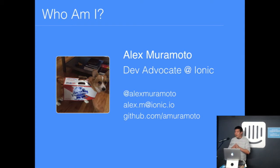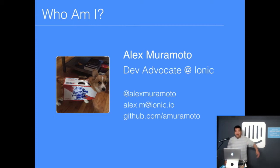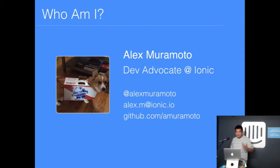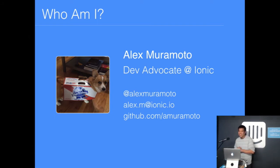My name is Alex and I am the dev advocate at Ionic. I've actually been an Ionic user for a number of years, and I was primarily an Angular 1 developer before I came to Ionic. You can reach me anytime on Twitter or directly by email. My GitHub has a lot of code samples. That is my dog Allie — she is exactly as pissed off as she looks in that photo.